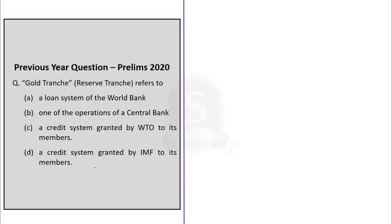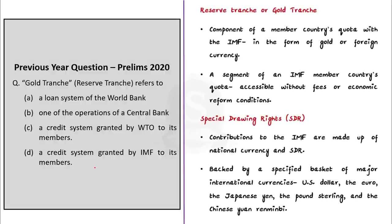This question is based on economy. Gold tranche or reserve tranche refers to a credit system granted by the IMF to its members — that is option D. IMF-based questions are very common in UPSC. Reserve tranche is the component of a member country's quota with the IMF that is in the form of gold or a foreign currency. It is a segment of an IMF member country's quota that is accessible without fee or economic reform condition — so this is unconditional.